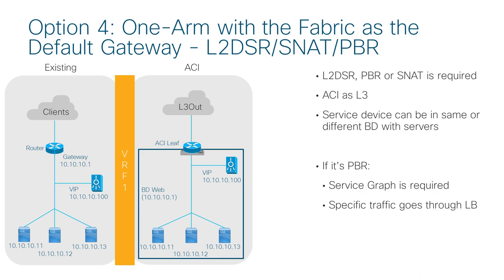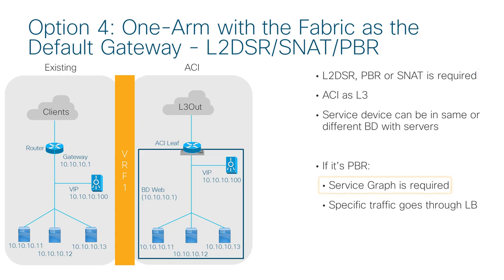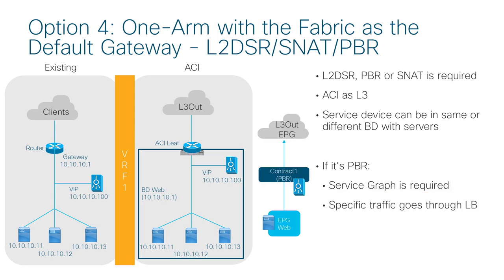The last design is pretty much the same as the previous example, except that servers and load balancer are in the same L3 bridge domain. Source NAT or PBR is required. If PBR is used, service graph is mandatory. This design can be used for L2 DSR, direct server return, where the return traffic directly goes back to the client.